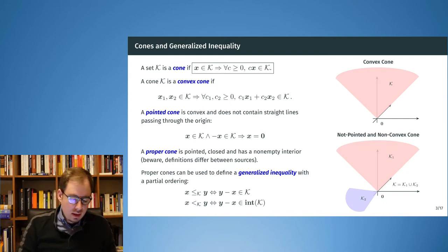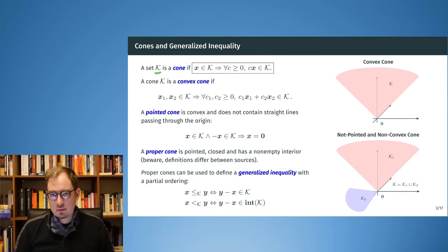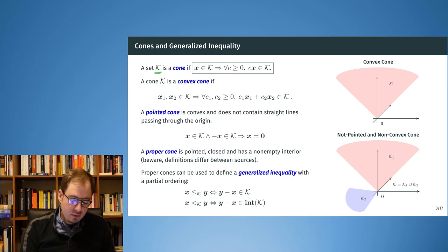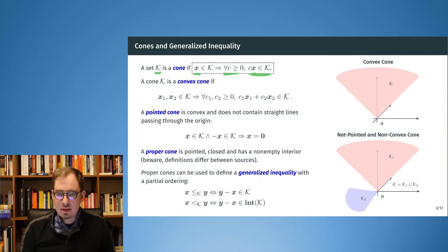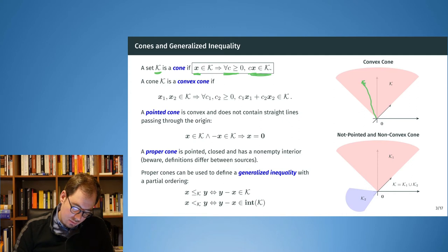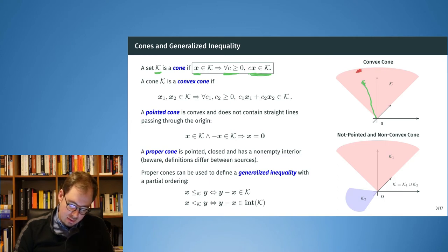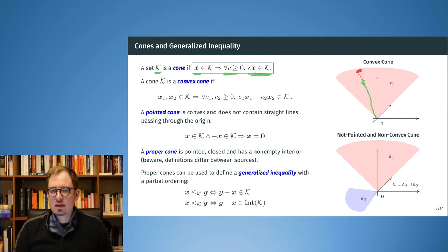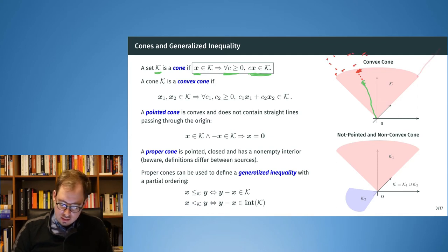Now, what are cones? The definition is rather easy. A set K — we denote cones with calligraphic notation — is a cone if for every element x contained in K, and for every positive scalar, the result of multiplying that scalar with x will still be in K. On the right-hand side we see a cone and it's easy to visualize: here we have a point x inside the cone, and if we multiply it with a constant we arrive at some other point x-prime, which is still contained in the cone.